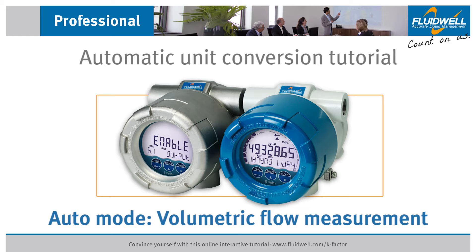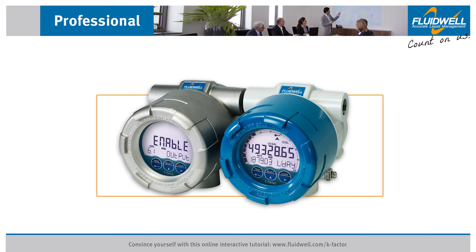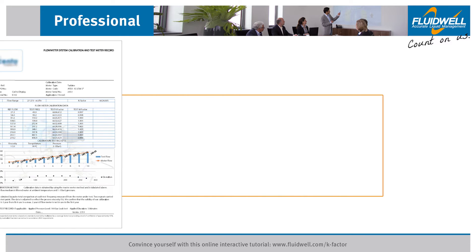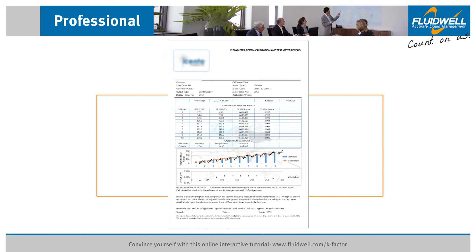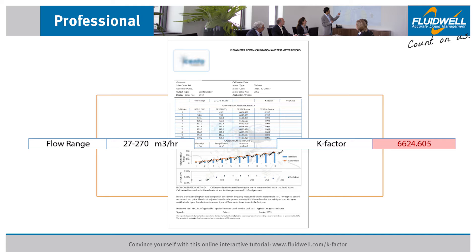The k-factor is a number that represents the amount of pulses which relates to the quantity of a material that passes the flow meter. It is also expressed as number of pulses per unit of measure.